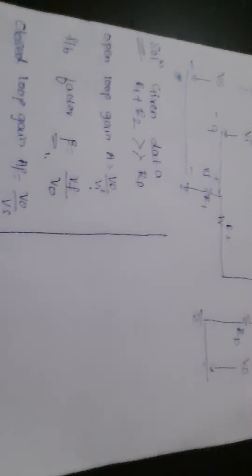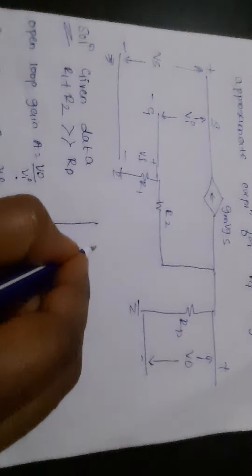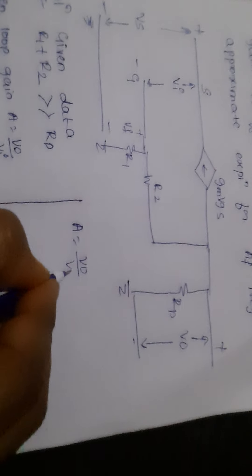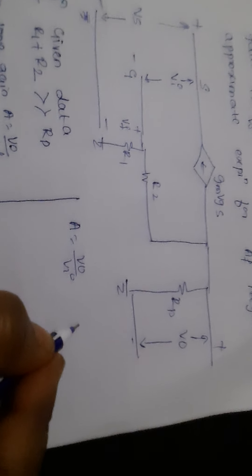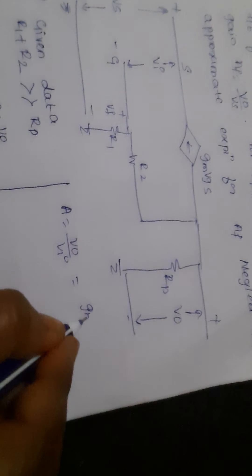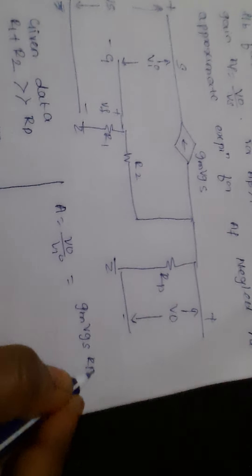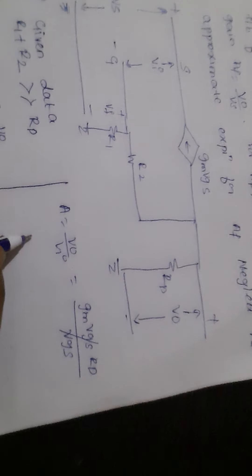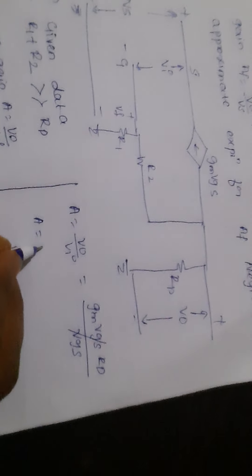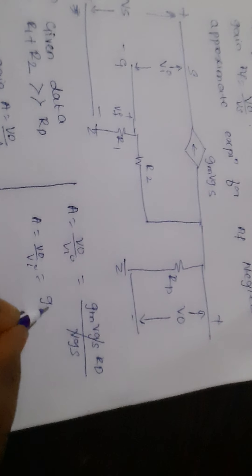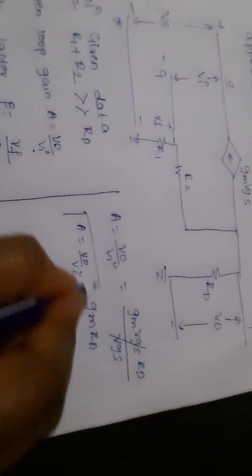Next we will find the open loop gain A, which is given by the formula V_naught upon Vi. This expression can be written as gm·Vgs·rd upon Vgs — the Vgs terms cancel — so the open loop gain A equals gm·rd.